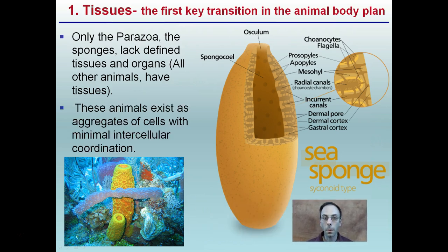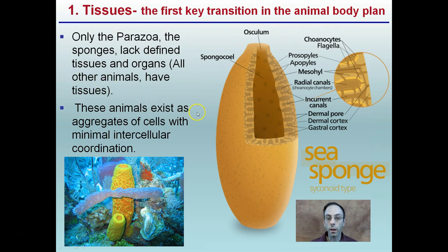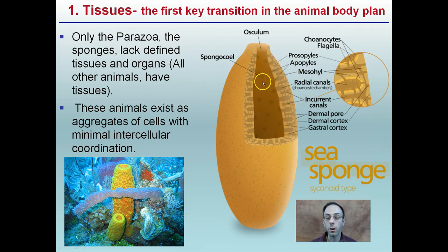Tissues is the first key transition in the animal body plan. Only Porifera — the sponges — lack defined tissues and organs. All other animals have tissues. This lack of defined tissues is a key way to identify a sponge. These animals exist as aggregates of cells with minimal intercellular coordination, meaning they are composed of a collection of cells.